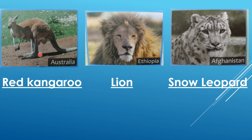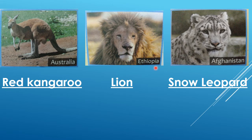This animal is found only in Australia. Yes, red kangaroos! Red kangaroos — they are found only in Australia. This is Australia's national animal. Ethiopia — this lion is found in many places, but they are also in Ethiopia and they are the national animal of Ethiopia.